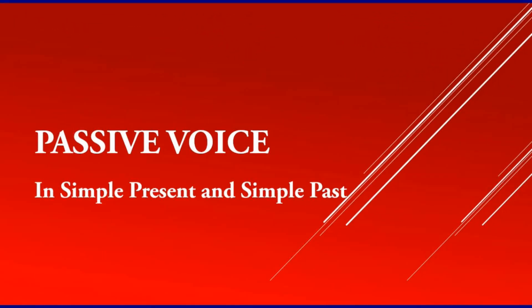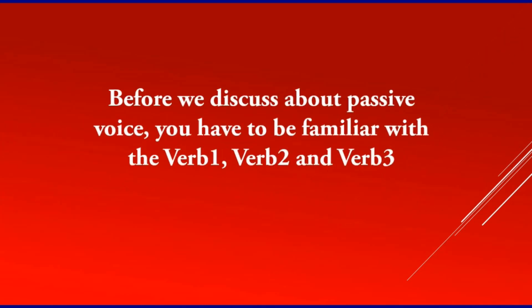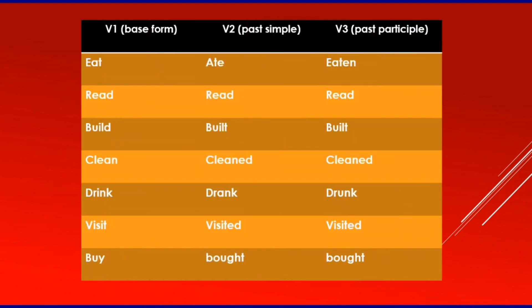Passive voice in simple present and in simple past. Before we discuss about passive voice, you have to be familiar with verb 1, verb 2, and verb 3. I'll give you some examples. Eat, ate, eaten — eat as verb 1, ate is verb 2, and eaten as verb 3. Read, read, read, and so on. So it is important for you to know all of them and practice.